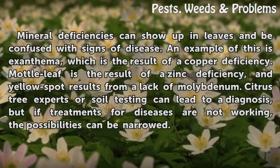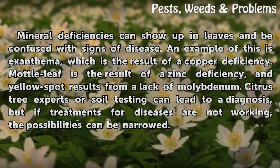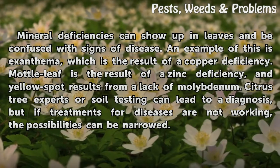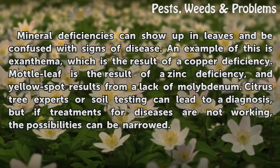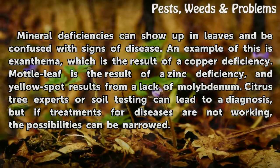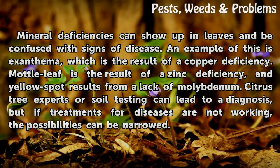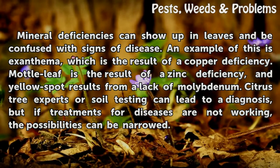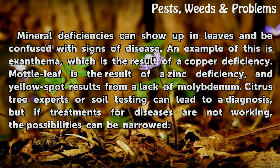Mineral deficiencies can show up in leaves and be confused with signs of disease. For example, Exanthema is the result of a copper deficiency, mottled leaf is the result of a zinc deficiency, and yellow spot results from a lack of molybdenum. Citrus tree experts or soil testing can lead to a diagnosis, but if treatments for diseases are not working, these possibilities can be narrowed.